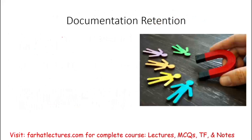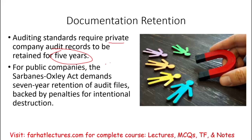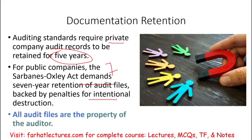Documentation retention — how long you should keep those documents — is important. Auditing standards require private companies, under the AICPA, to keep records for five years. Public companies must keep records a little longer: seven years, especially after Enron, and there are penalties for intentional destruction. Remember, audit files are the property of the auditors.